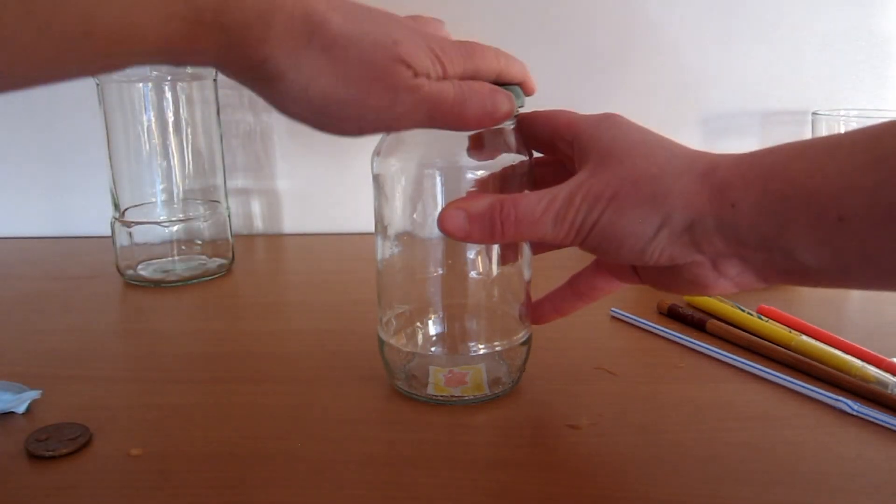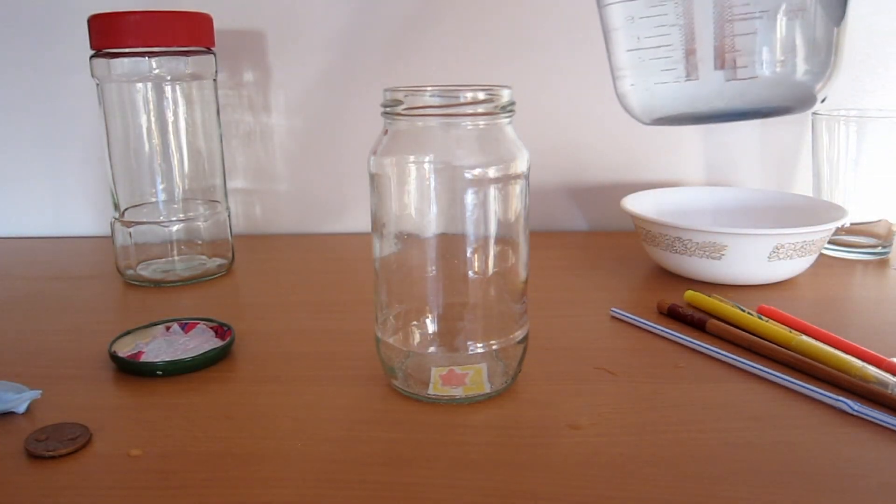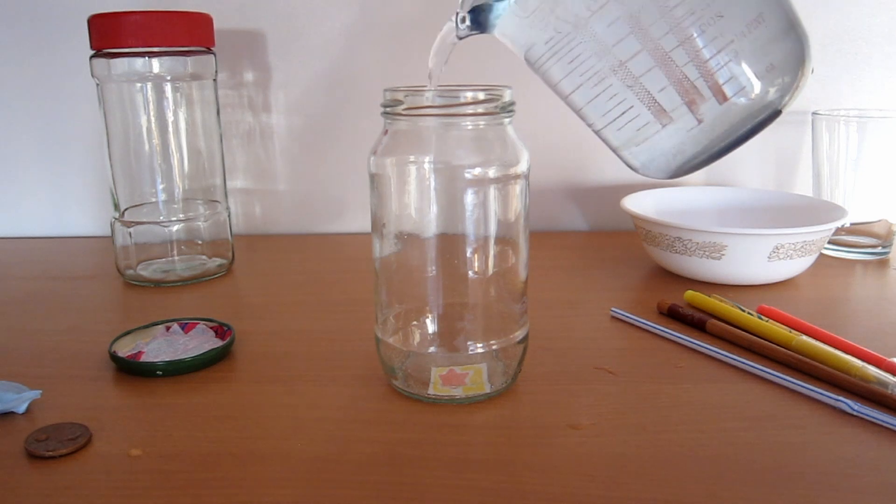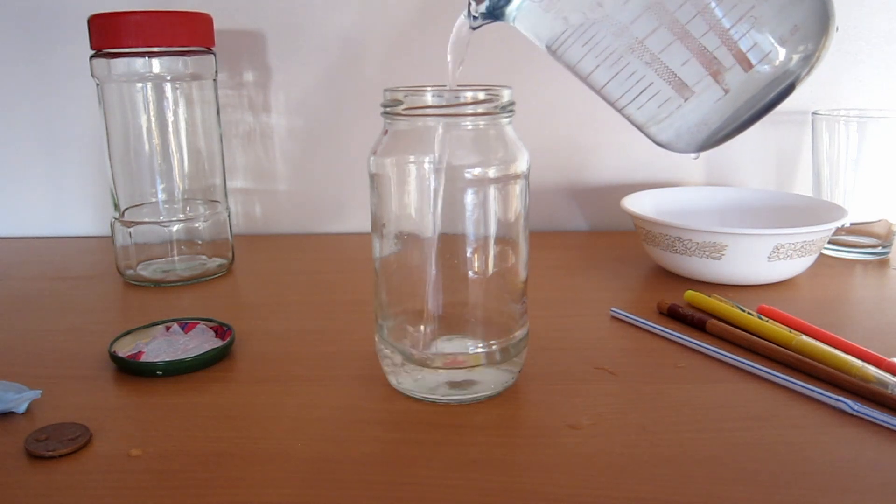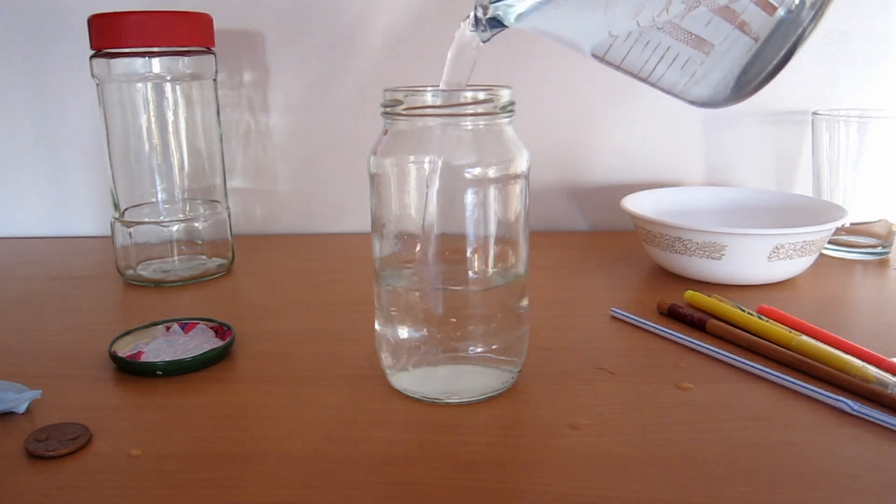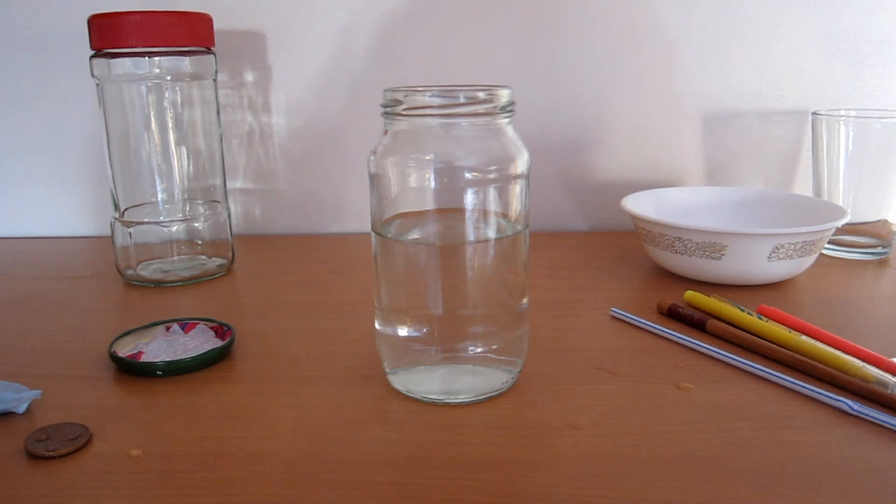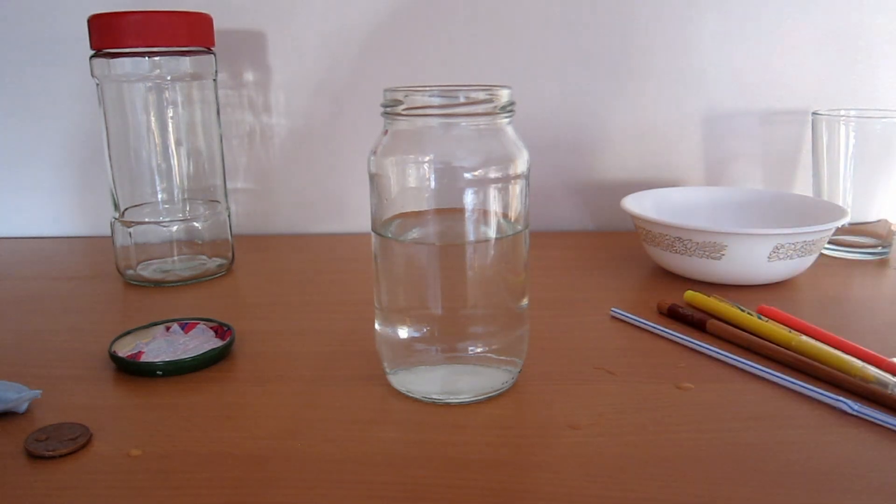What we are going to do is take the lid off, fill the jar with water, and as we do that, the picture disappears. Magic! The water is bending the light so much you can't see the stamp anymore.